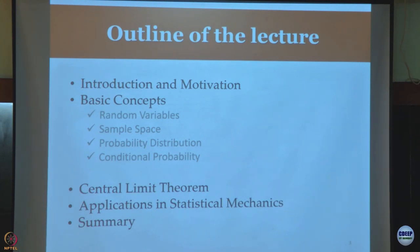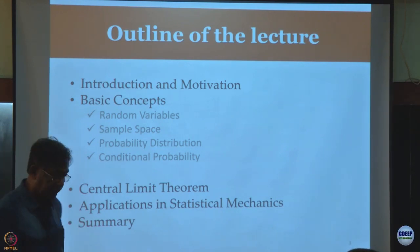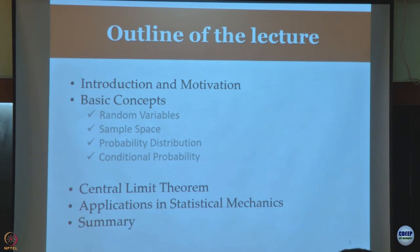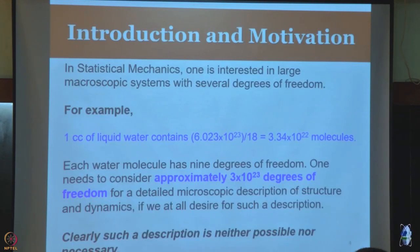This particular part of the lecture will be motivation. I will go through what is a random variable, how do we define sample space which is so important in statistical mechanics, then probability distribution. Conditional probability is extremely important because it goes over to become the radial distribution function. You have heard of Bayes' theorem in class 12. Then we will do central limit theorem. As the name says, mathematicians are not given to adjectives. They hardly say anything is interesting; everything is trivial.